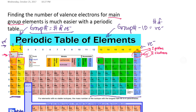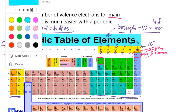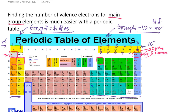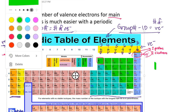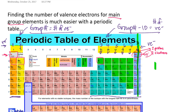Applying that same rule, groups 14, 15, 16, 17, and 18 have 4, 5, 6, 7, and 8 valence electrons respectively. So as we said, the octet rule states that most atoms try to get the same number of valence electrons as the noble gases, meaning most atoms would like to have 8 valence electrons.